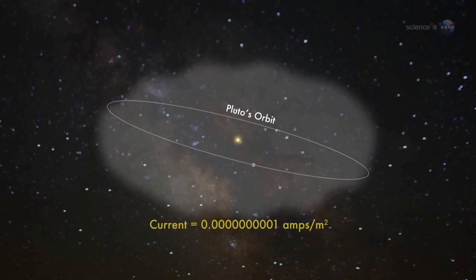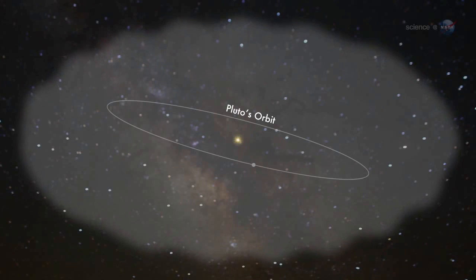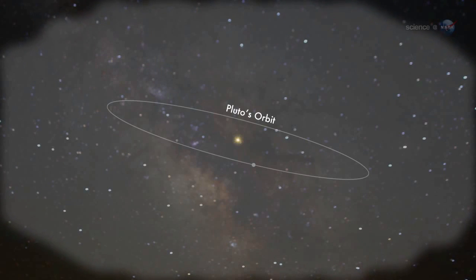But there's a lot of it. The amperage flows through a region 10,000 kilometers thick and billions of kilometers wide. Electrically speaking, the entire heliosphere is organized around this enormous sheet.